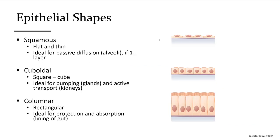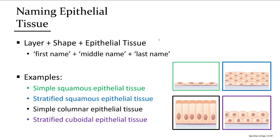The three shapes are squamous, cuboidal, and columnar. For example, one layer of flat cells is simple squamous epithelial tissue. Multiple layers of flat cells is stratified squamous epithelial tissue. One layer of brick-shaped cells is simple columnar epithelial tissue. And multiple layers of cube-shaped cells is stratified cuboidal epithelial tissue.